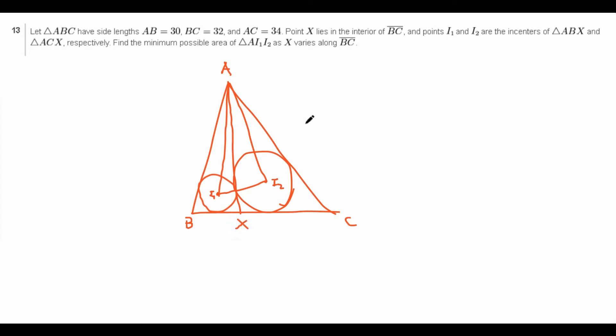So in order to find the minimum value of the area of AI1, I2, we have to first figure out how to find the area of AI1, I2. And once we find the area in terms of something, then perhaps it will be easy enough to find the minimum, and then we'd be done.